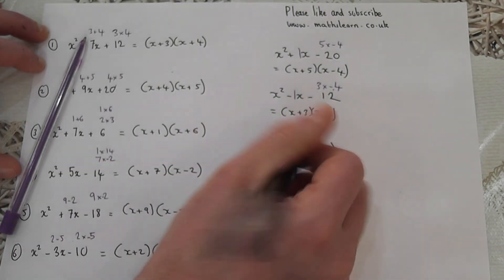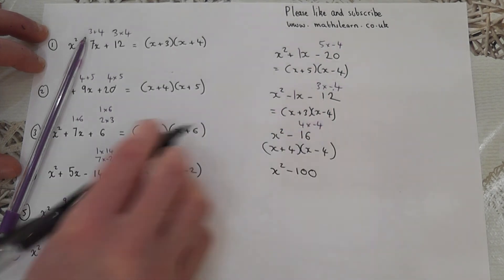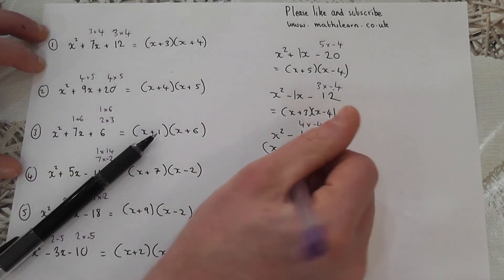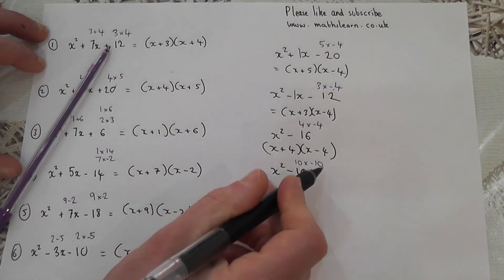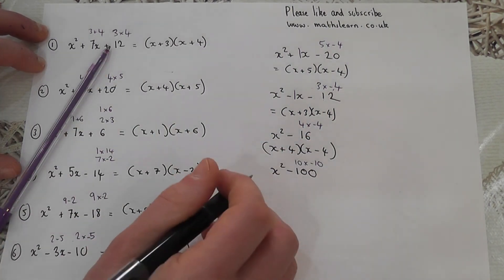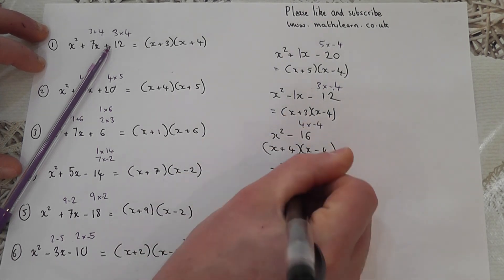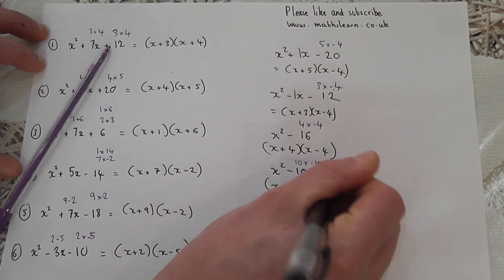For example, x squared minus 100. 100 is a square number. It's 10 times minus 10 in this case. 10 take away 10 is nothing, so the x terms cancel out. It becomes x plus 10 and x minus 10.